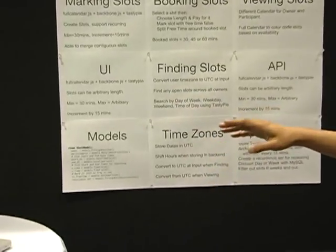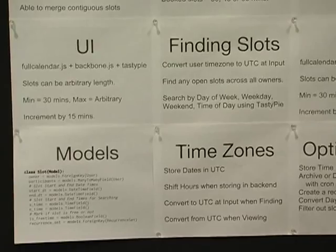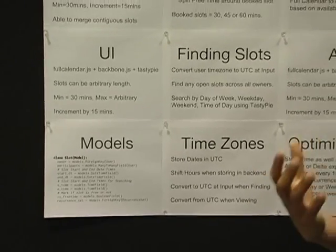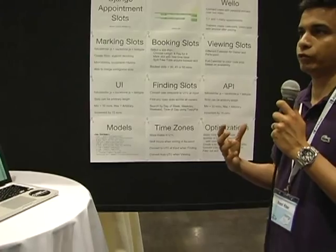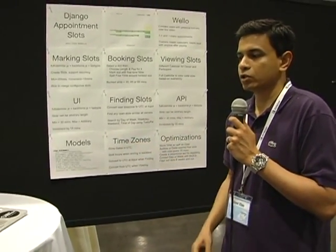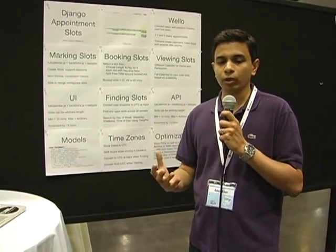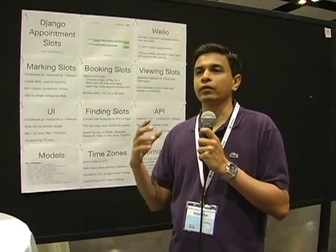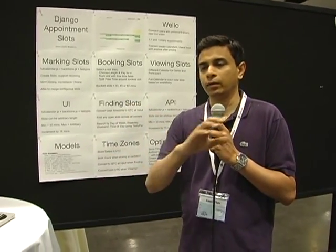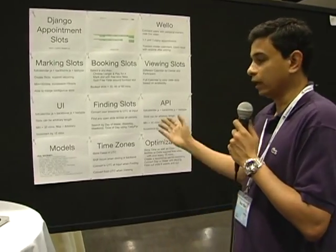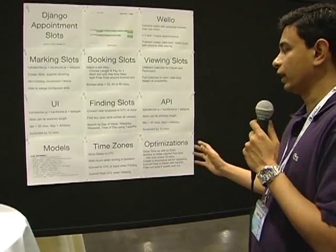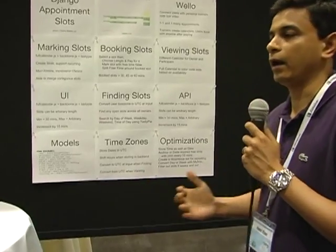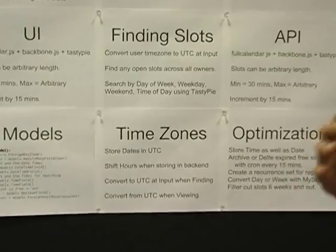We use FullCalendar and we've spent almost a year figuring out how people are able to search through these different slots. One unique thing we have to do as a marketplace is search for slots all across our trainer user base. In a standard Google appointment slots scenario, you're usually booking a slot with just one person, but in our case users can search for any given time slot across different trainers. One of the things we had to think about when designing this was how to handle different time zones, because our trainers are all over the country — how does the user search for a specific time and get the right results.